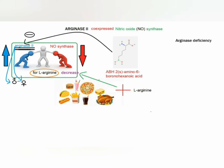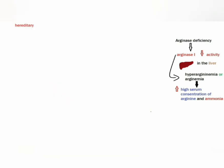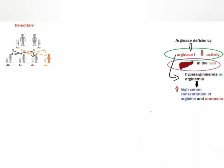Arginase deficiency typically refers to decreased function of arginase 1, the liver isoform of arginase. This deficiency is commonly referred to as hyperargininemia or argininemia. The disorder is hereditary and autosomal recessive. It is characterized by lowered activity of arginase in hepatic cells and is considered to be the rarest of the heritable defects in ureogenesis.